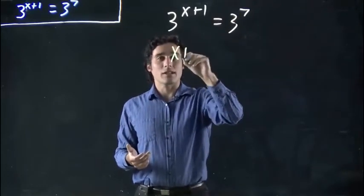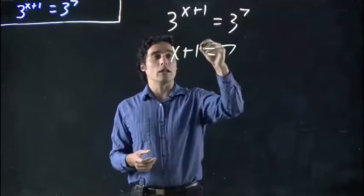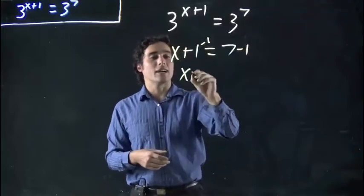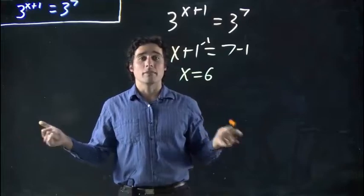So that means x plus 1 must equal 7. Now I'm solving for x just like we're used to doing. Subtract 1 from both sides, I get x equals 6, and we're done with the problem. x equals 6.